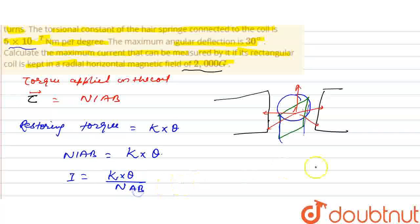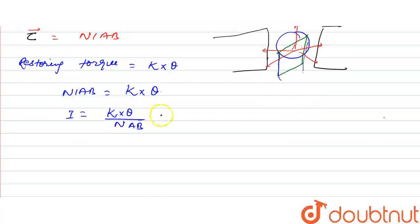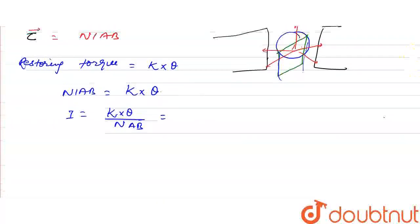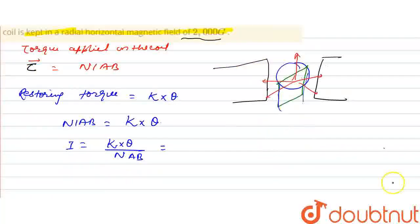So here k value is 5×10^-7. Theta value is 30 degrees, and this will be per degree.